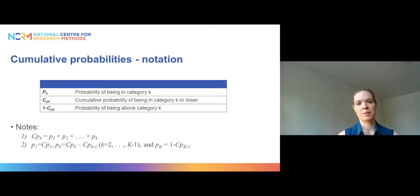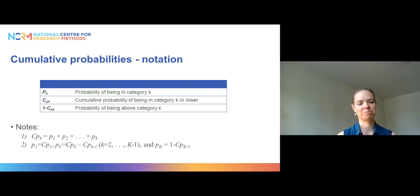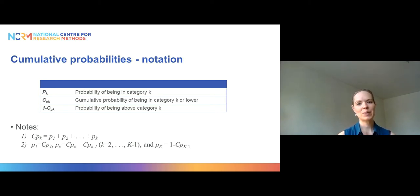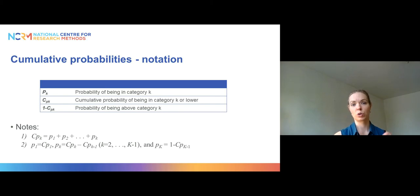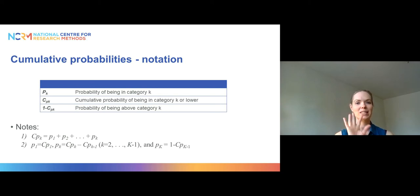An ordinal model essentially wants to figure out the cumulative probability of being in different combinations of the categories of the outcome. Here is the notation: Pk is the probability of being in response category k. CPk means the cumulative probability of being in category k or lower. So CP2 would be the cumulative probability of being in category one or two combined. And one minus CPk is the probability of being above category k.